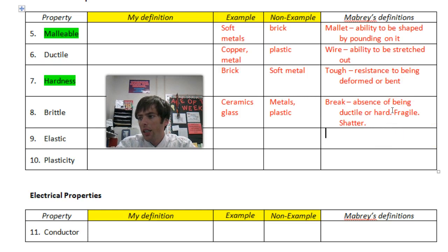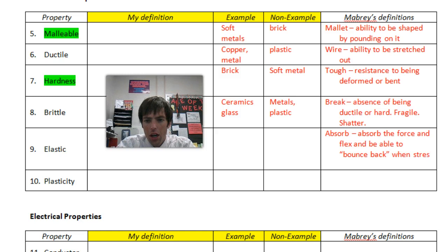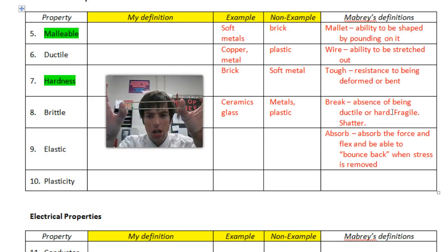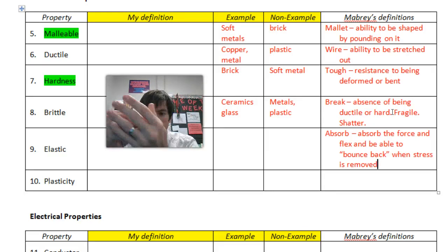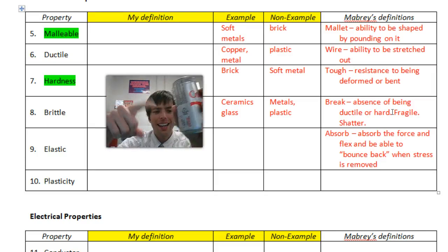Let's talk elastic. The key word for elastic is 'absorb.' To be elastic is to absorb the force and flex, and be able to bounce back when a stress is removed. The classic example is your elastic rubber band — it absorbs the force and bounces back. If I pound a full Diet Coke can, it isn't going to bounce back; the dent is going to stay — that's not elastic.